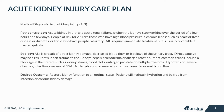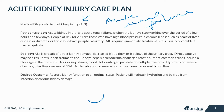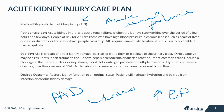Acute kidney injury, or AKI, also known as acute renal failure, is when the kidneys stop working over a period of a few hours or days. People at risk for AKI are those who have high blood pressure, a chronic illness such as heart or liver disease, or diabetes, or those who have peripheral artery disease. AKI requires immediate treatment, but is usually reversible if treated quickly.